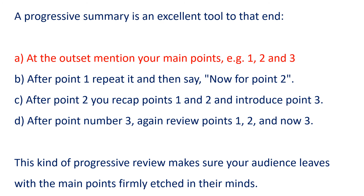A. At the outset, mention your main points — for example, 1, 2, and 3. B. After point 1, repeat it and then say, 'Now for point 2.' C. After point 2, you recap points 1 and 2 and introduce point 3. D. After point 3, again review points 1, 2, and now 3. This kind of progressive review makes sure your audience leaves with the main points firmly etched in their minds.